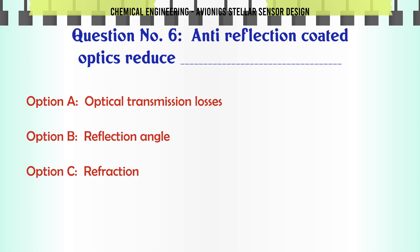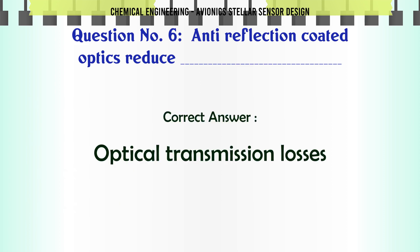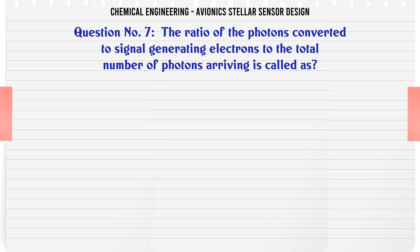Anti-reflection coated optics reduce: A. Optical transmission losses, B. Reflection angle, C. Refraction, D. Intensity of star image. The correct answer is Optical transmission losses.